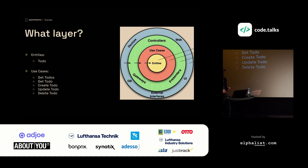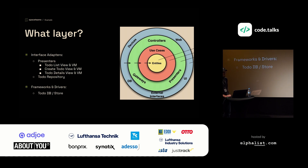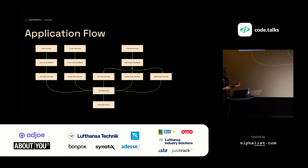Now, because we're setting up a clean architecture-inspired application, which part of this app belongs to which layer? Our entities — our domain objects — are the to-dos, so we put them in the center. We have use cases like get to-dos, get to-do, create to-do, update to-do, and delete to-do. In the interface adapter layer, we have our presenters: the to-do list view and view model, create to-do view and view model, the to-do details view and view model, and also our to-do repository. In the frameworks and drivers layer, we have our to-do data source. The to-do details view uses the to-do details view model, which uses three use cases — get to-do, update to-do, and delete to-do — and all use cases use the to-do repository, which finally uses our to-do data source.